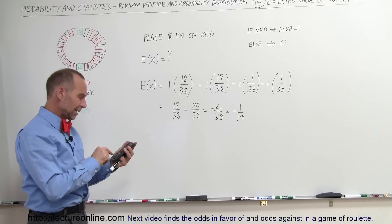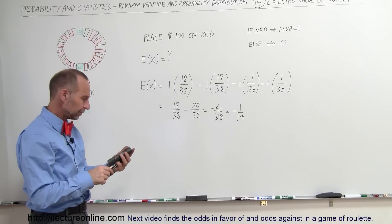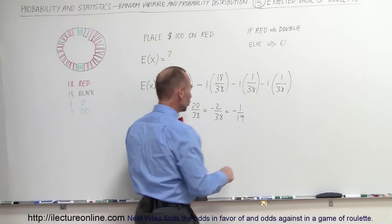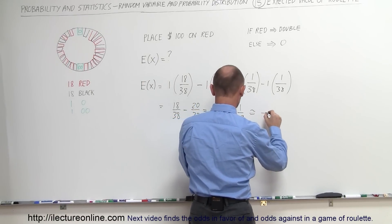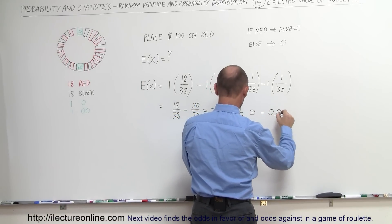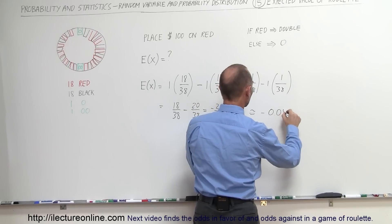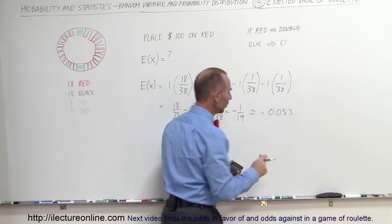So it is 1 divided by 19, okay, it is equal to approximately minus 0.053. Alright, that's close enough, that's two significant figures.